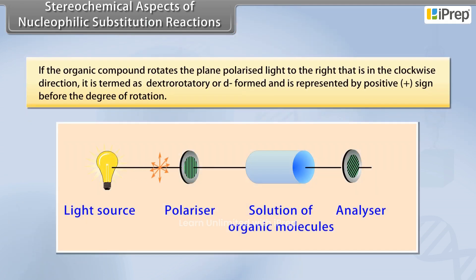If the organic compound rotates the plane polarized light to the right, that is, in the clockwise direction, it is termed as dextrorotatory or d-formed and is represented by positive (+) sign before the degree of rotation.